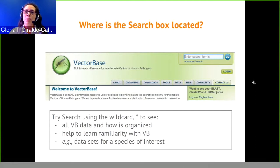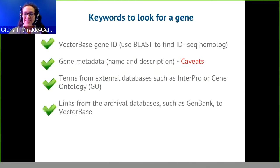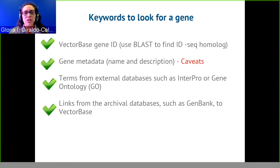When browsing the website, if you're looking for a gene it's best to use the VectorBase gene ID, which is analogous to GenBank's accession number. All genes have tied metadata so you can call them by name — for example, searching for a gene called 'actin.' If you don't know the VectorBase gene ID, use BLAST: take the sequence of the gene, run it through BLAST, and BLAST will tell you the VectorBase ID so you can find information for it inside the website.